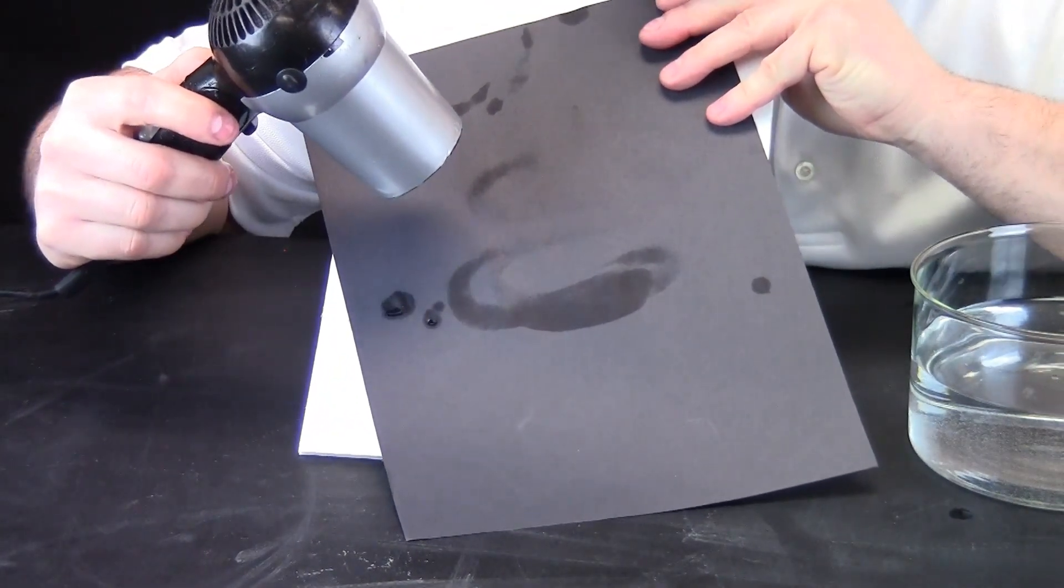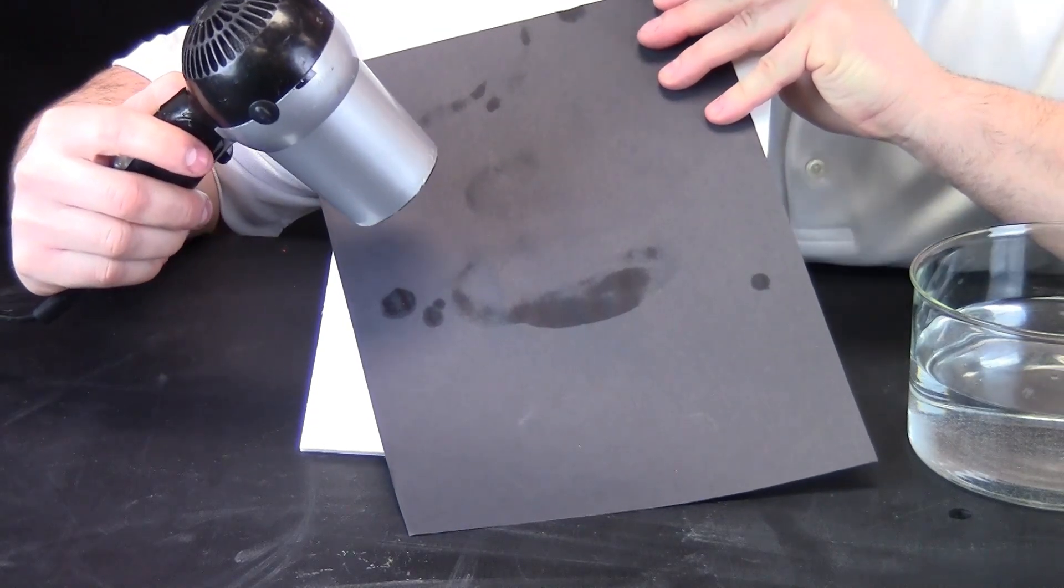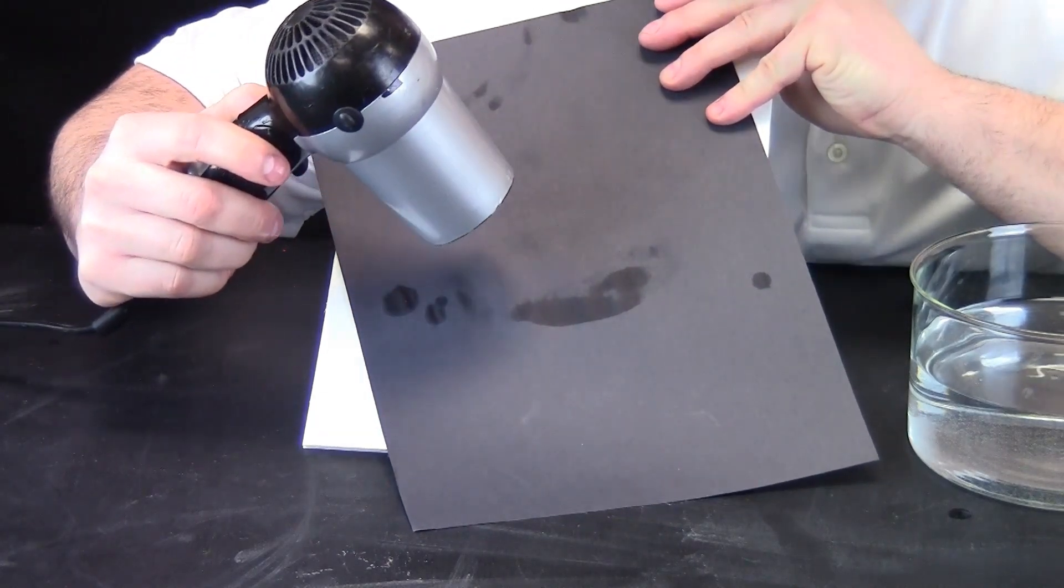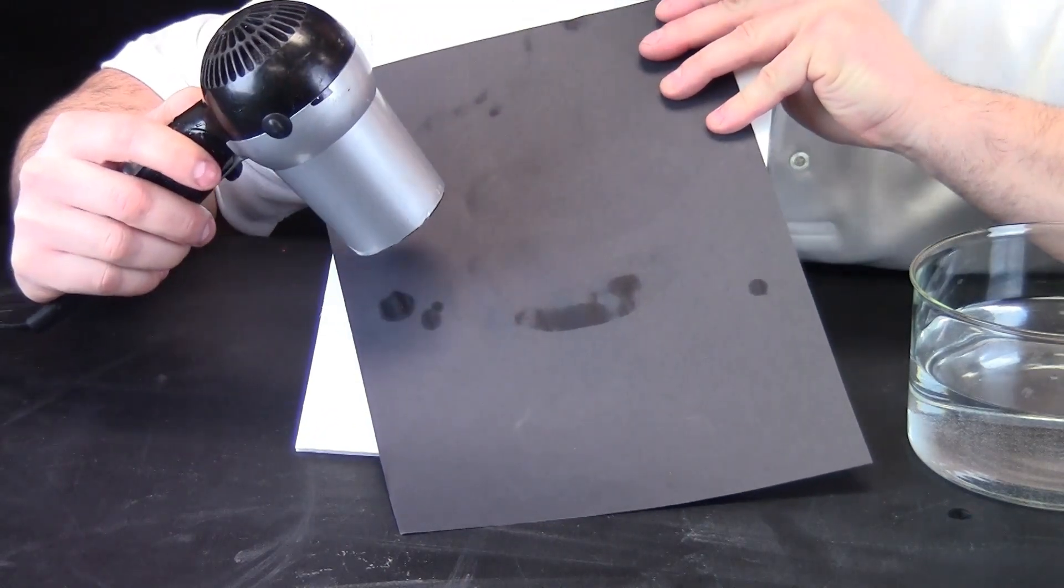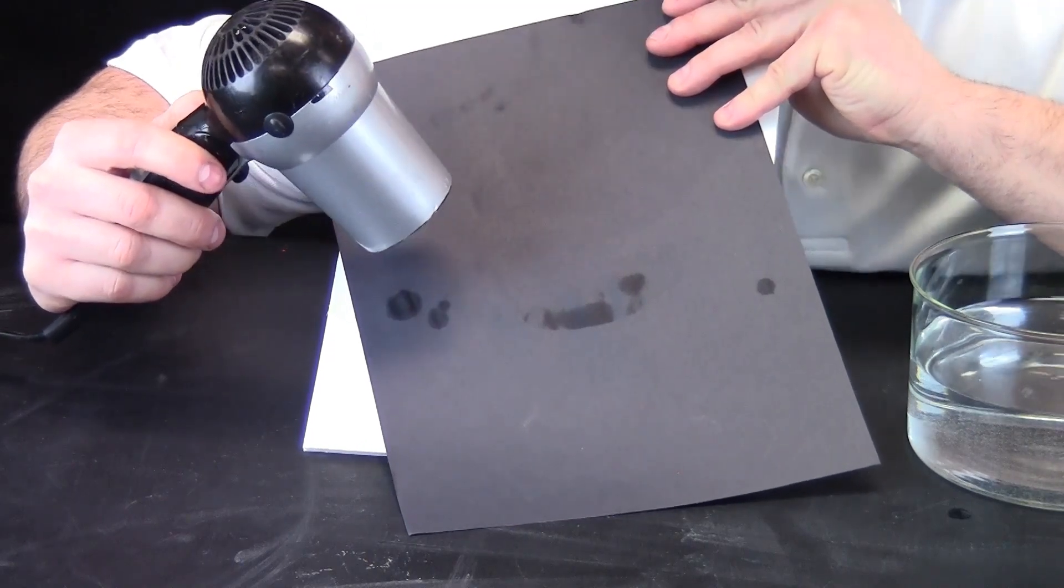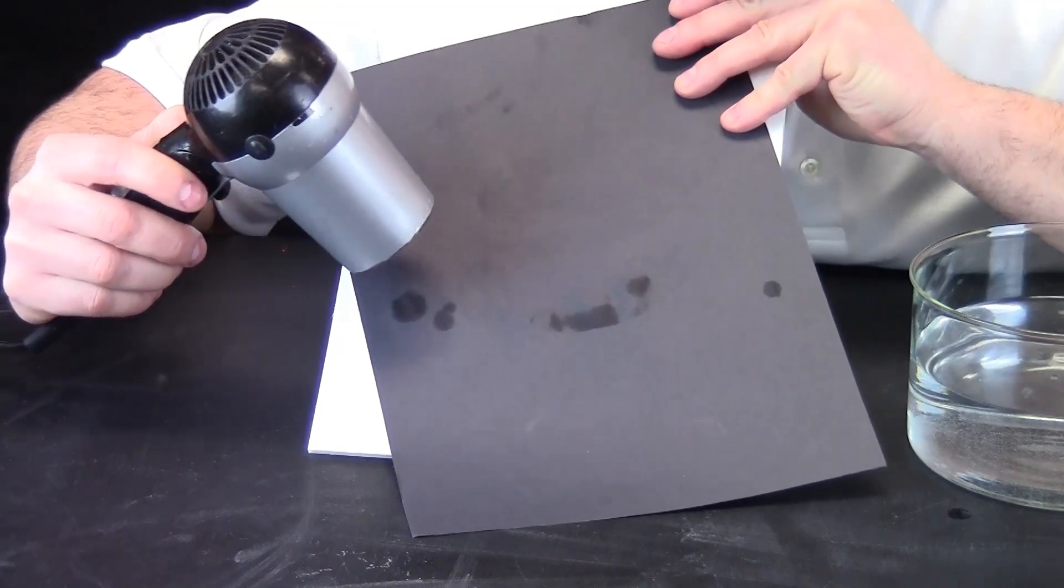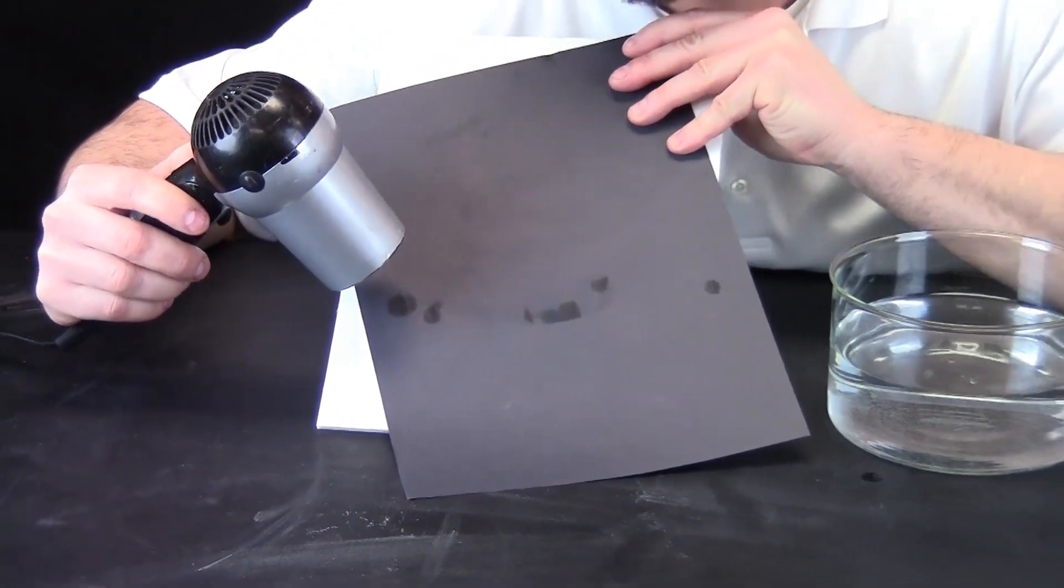You cannot see it, but this hair dryer is putting out some serious heat. Watch what happens to the liquid water. I am not a magician. This water seems to be disappearing. But it is really not disappearing. It is still here in the air. We call it a gas. The third phase is a gas.